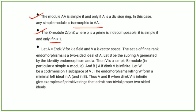Let A = End_K(V) for k a field and V a k-vector space. The set a of finite rank endomorphisms is a two-sided ideal of A. Let B be the subring A generated by the identity endomorphism and a. Then V is a simple B-module, in particular a simple A-module. Thus A and B when dimₖV is infinite give examples of primitive rings that admit non-trivial proper two-sided ideals.